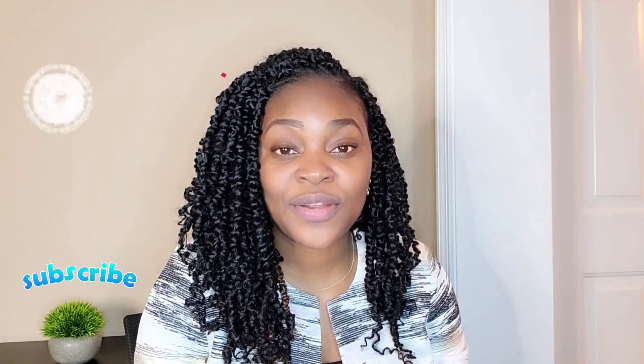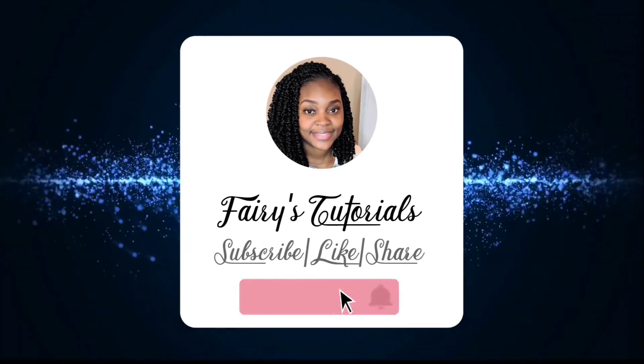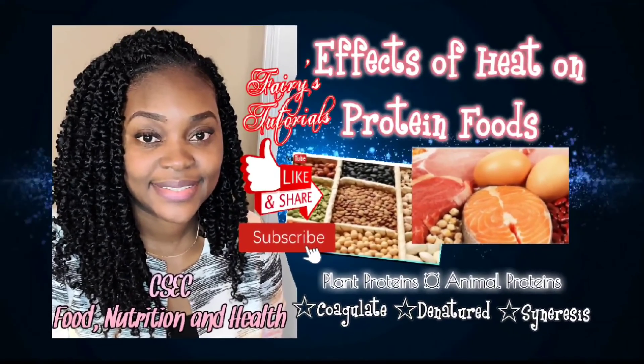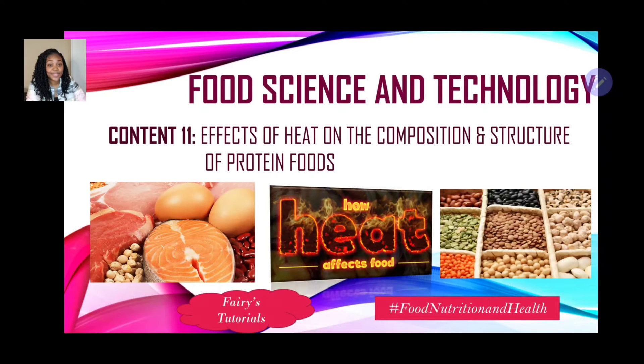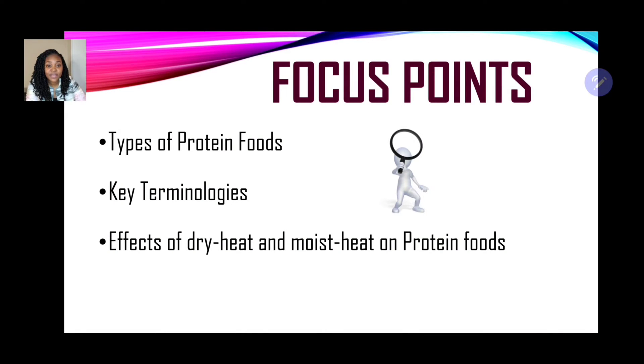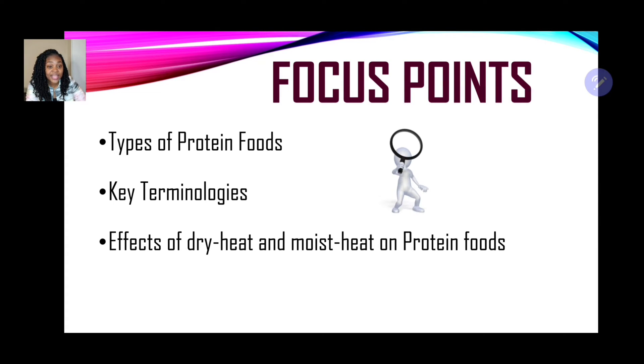Welcome back to Ferris Tutorials. In today's episode we're looking at Food Nutrition and Health, Section 4: Food Science and Technology, Content 11 — the effects of heat on the composition and structure of protein foods. Our focus points include: the different types of protein foods, defining key terminologies, and evaluating the effects of dry heat and moist heat on protein foods.